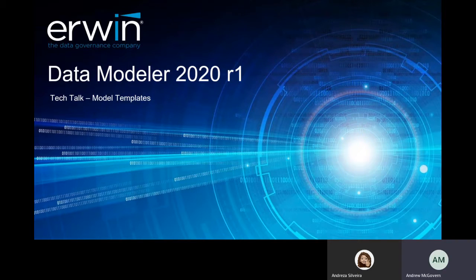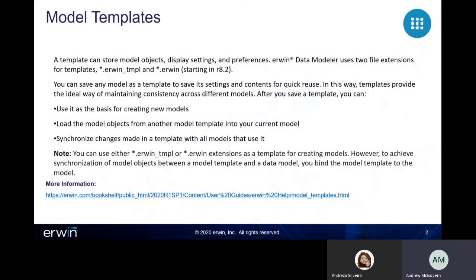You're going to be walking us through model templates. This is part of the podcast series that we've been putting together. We're going to be watching these in order — it basically would start with reverse engineering, then complete compare, then forward engineering, and now we're going to talk about model templates. We're going to follow up with the bulk editor and the report writer. We're using this to help jumpstart your use of the Irwin data modeler.